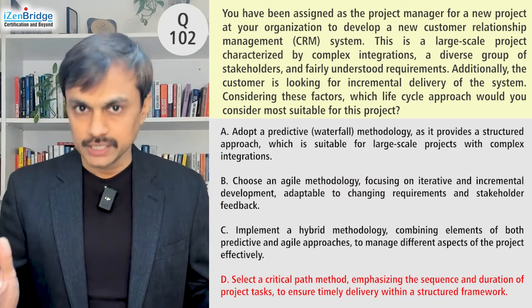Since the question indicates elements of both adaptive and predictive, we go with Option C — the hybrid approach. This question maps to the ECO Process domain Task 13, which talks about determining the appropriate project methodology, method, and practices. The overall topic is project life cycle selection, where we identify the right life cycle based on change volatility, project size, complexity, and delivery cadence.